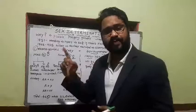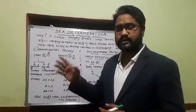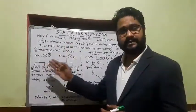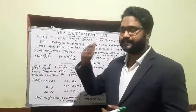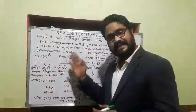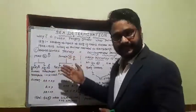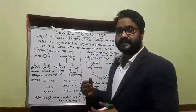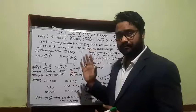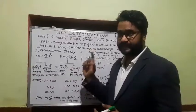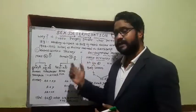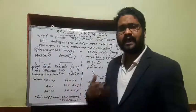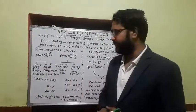Once again: XX-XY is grasshopper and human; XX-XO is grasshopper and cockroaches; ZZ-ZW is birds and fishes; ZZ-ZO is moths and butterflies. This must be remembered correctly — it is important for matched-pairs type questions. Now let us see how sex determination occurs in humans.